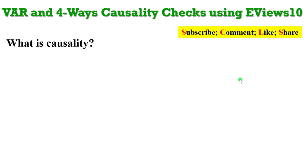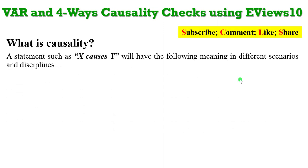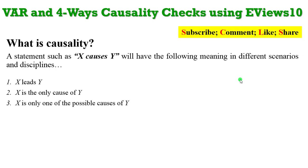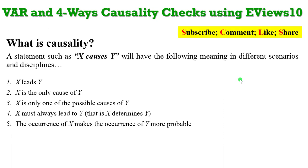So what is causality? In a statement such as X causes Y, this can have the following meanings in different scenarios and disciplines: X leads Y, X is the only cause of Y, X is one of the possible causes of Y, X must always lead to Y — that is, X determines Y — or X is a probabilistic cause of Y.